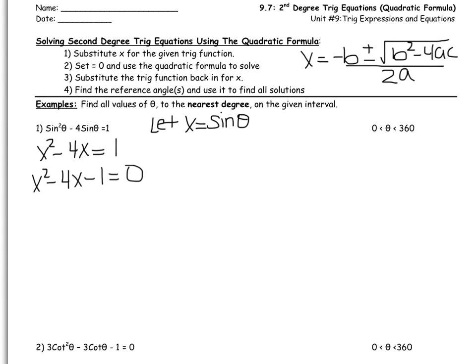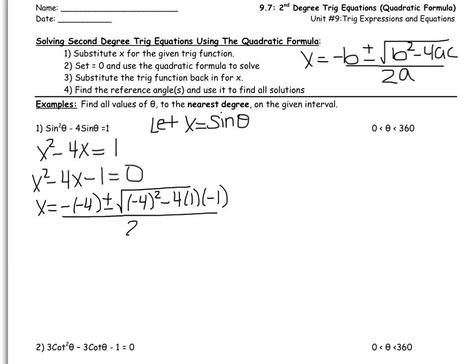So we're going to use the quadratic formula. Let's figure out what a, b, and c are. Remember, a is the coefficient in front of x squared, so a equals 1. b is the coefficient in front of x, so b equals negative 4. And c is the constant, which is negative 1. So x equals negative b plus or minus the square root of b squared minus 4ac, all over 2a. Plugging in: x equals — what is negative negative 4? Positive 4 — plus or minus the square root of something, over 2.